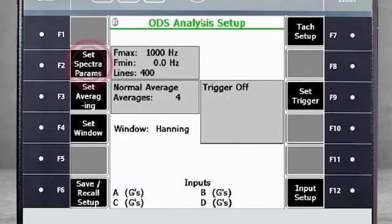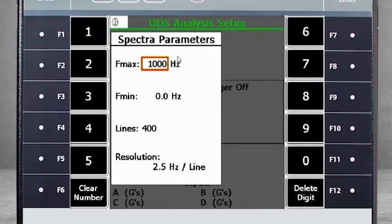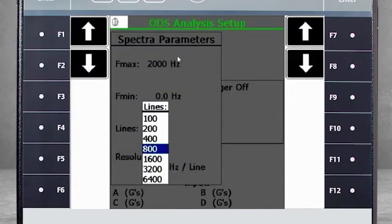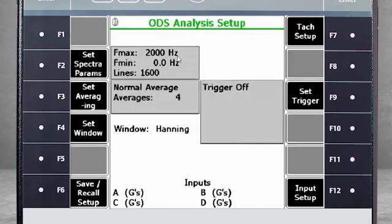Here you use F2 to change your FMax to 2000 hertz and 1600 lines of resolution. The other parameters are good for this ODS job, so I hit enter.